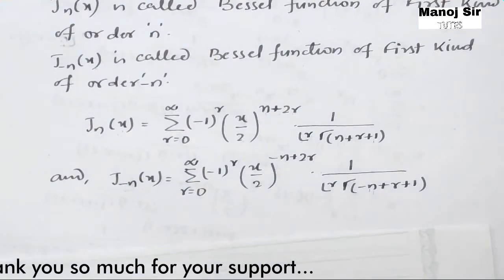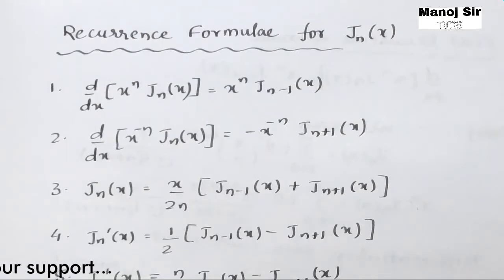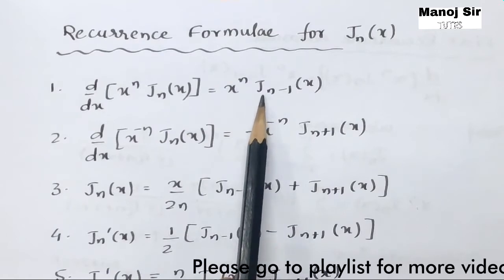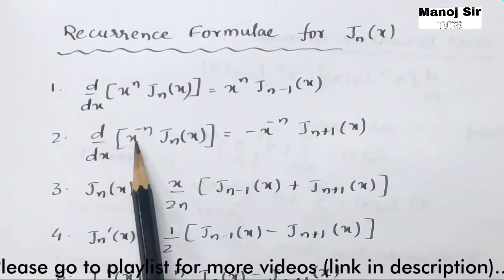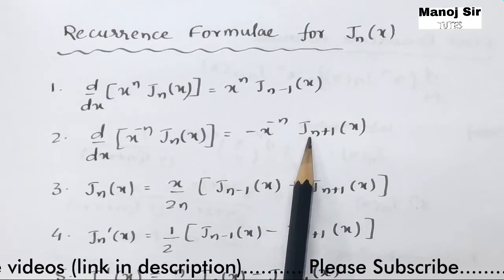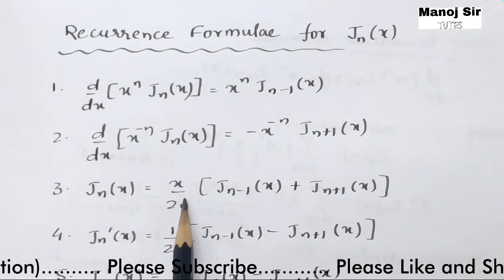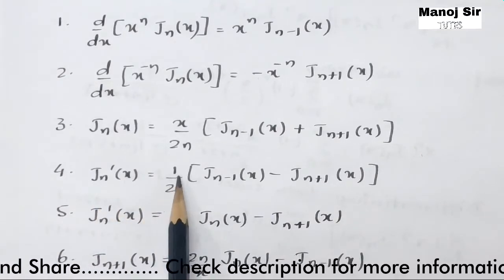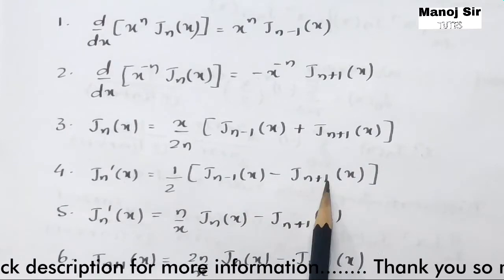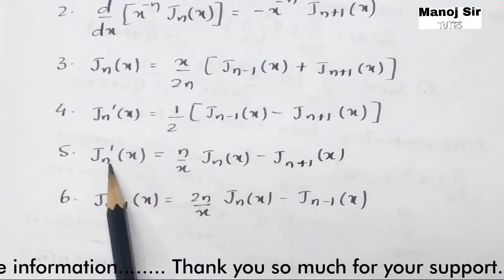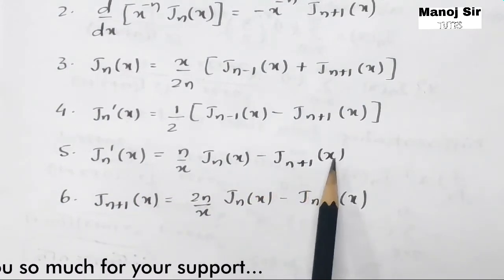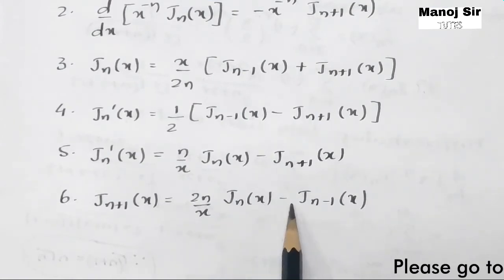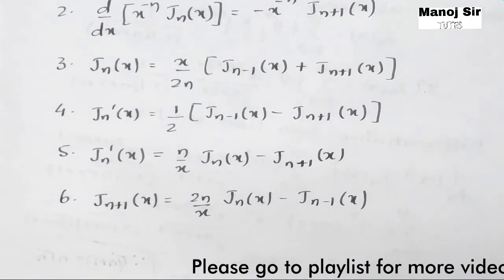Here are the six recurrence formulas for Jₙ(x): (1) d/dx [xⁿ Jₙ(x)] = xⁿ Jₙ₋₁(x); (2) d/dx [x⁻ⁿ Jₙ(x)] = −x⁻ⁿ Jₙ₊₁(x); (3) Jₙ(x) = (x/2n)[Jₙ₋₁(x) + Jₙ₊₁(x)]; (4) Jₙ'(x) = ½[Jₙ₋₁(x) − Jₙ₊₁(x)]; (5) Jₙ'(x) = (n/x) Jₙ(x) − Jₙ₊₁(x); (6) Jₙ₊₁(x) = (2n/x) Jₙ(x) − Jₙ₋₁(x). You need to remember all these recurrence formulas.